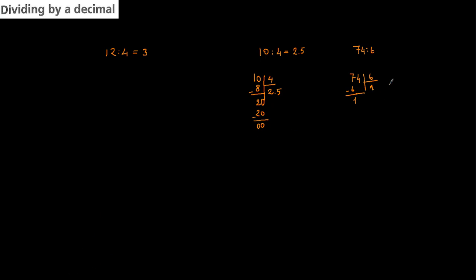We bring down the next digit, so the number becomes 14. In 14 we have two 6s. 2 times 6 equals 12, and 14 minus 12 equals 2. Now 2 is not divisible by 6, so we start the decimal part. We write a decimal point and add a zero, making it 20.